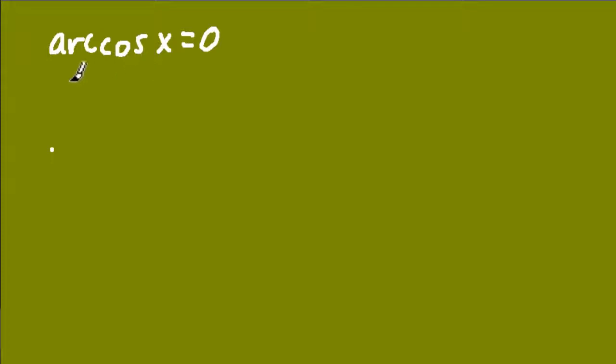And what this means is, the cosine of what angle gives us x? This is asking what's the angle that gives us this value? And this behaves a lot like our exploration in sine and cosine, with a couple of small differences.